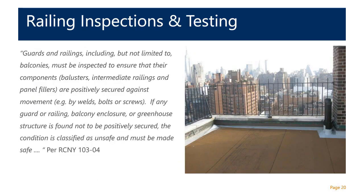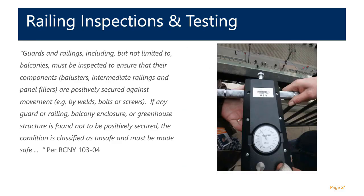Also required as part of the FISP inspection program is an assessment of all guards and railings on a building, including balcony railings, rooftop perimeter railings, fire escape railings, fire tower railings — anything on the outside of the building. This is not a code compliance check; it is a public safety inspection. The QEWI will review these railings to ensure components are positively secured and in good condition. Some QEWIs may perform a load test on a railing following structural code standards. If any guard, railing, balcony enclosure, or greenhouse structure is found not to be positively secured, the condition is classified as unsafe per RCNY 103-04.